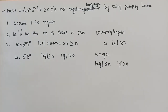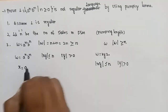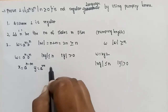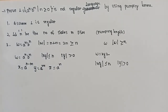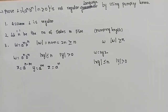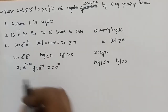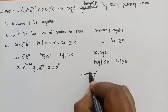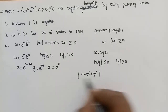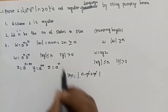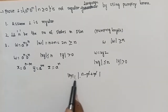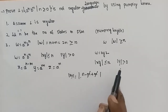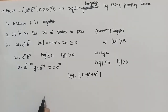Let's divide: x = a^(n−m), y = a^m, z = b^n. Now verify the conditions: |xy| = n, so the condition |xy| ≤ n is satisfied. Also, |y| = m > 0, so that condition is also satisfied.